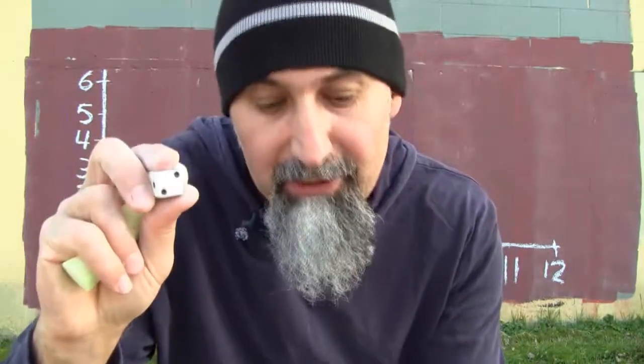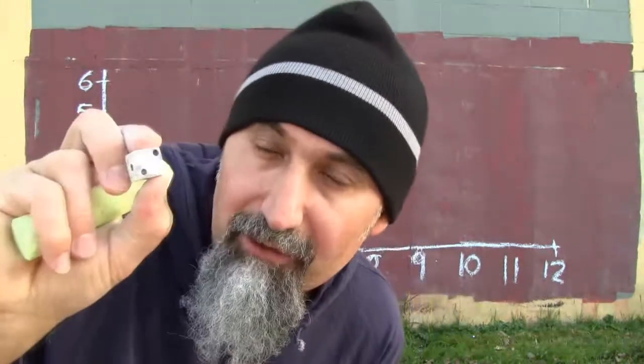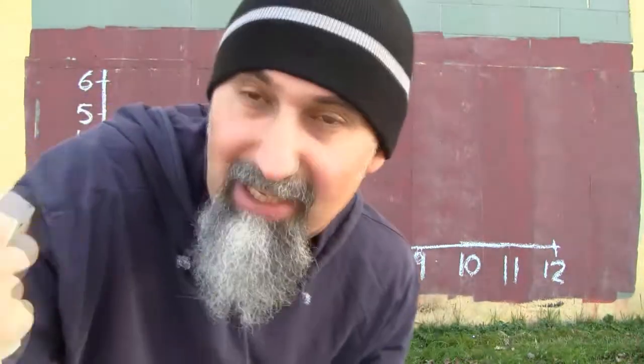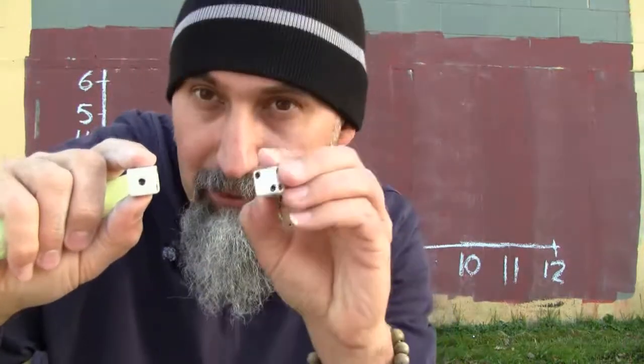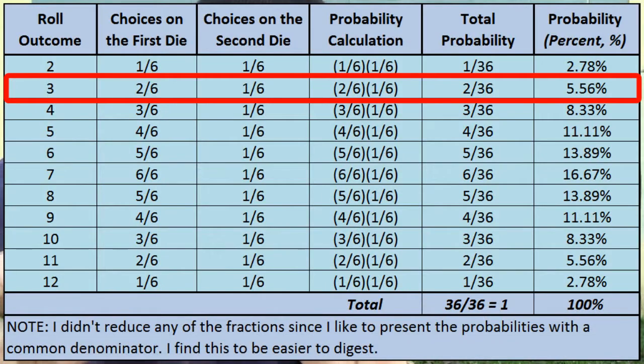For the number three, you can either get a one or a two on the first die. If you get a one on the first die, you need a two on the second die; if you get a two on the first die, you need a one on the second die. The probability is two out of six times one out of six, because no matter what you get on the first die you need a specific number on the second die. So two out of six times one out of six is 2/36 — that's the probability of getting a three, with two possible combinations: 1+2 and 2+1.